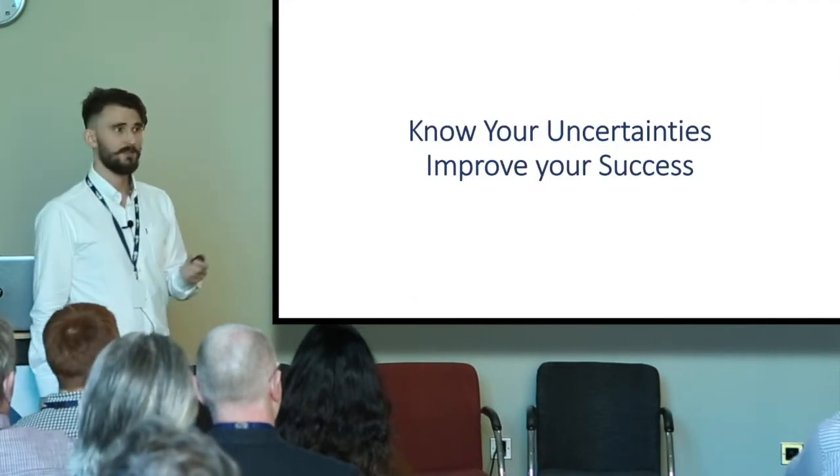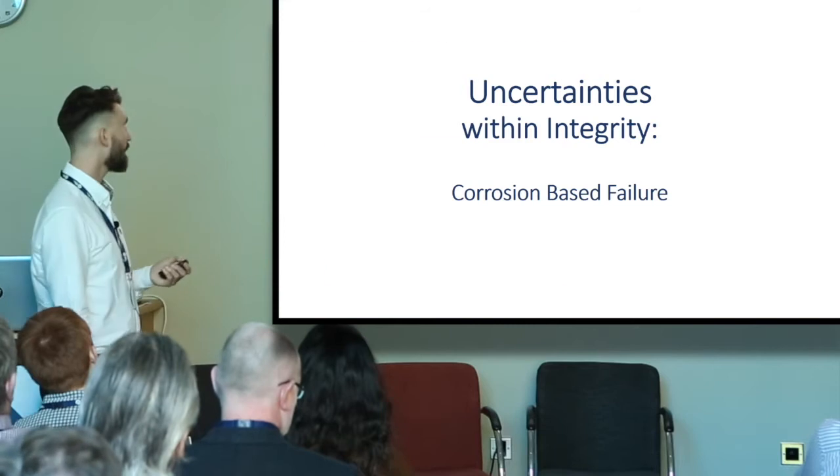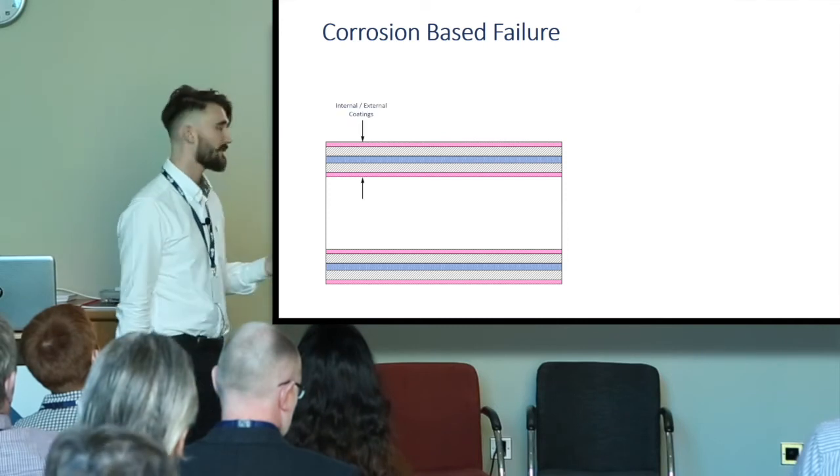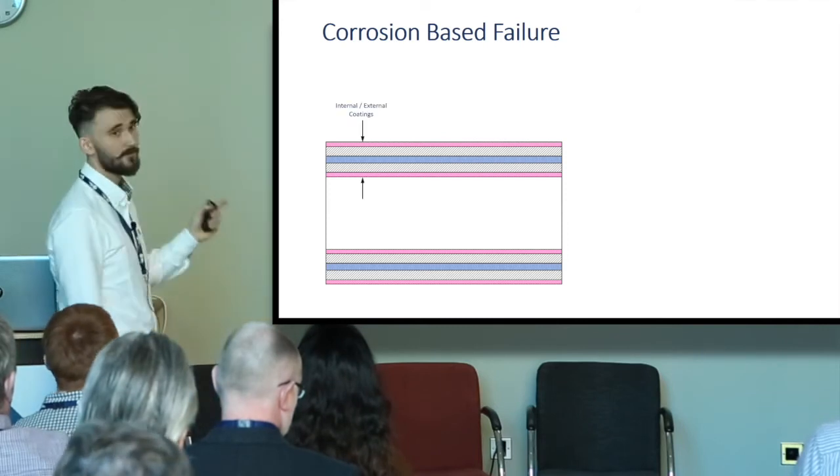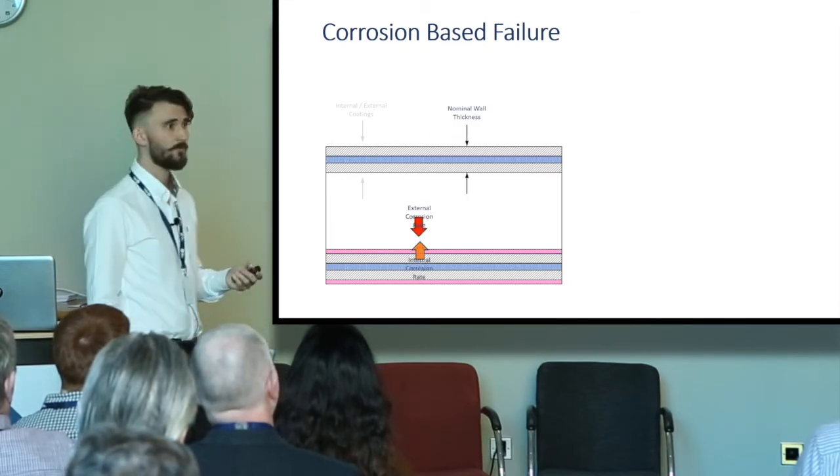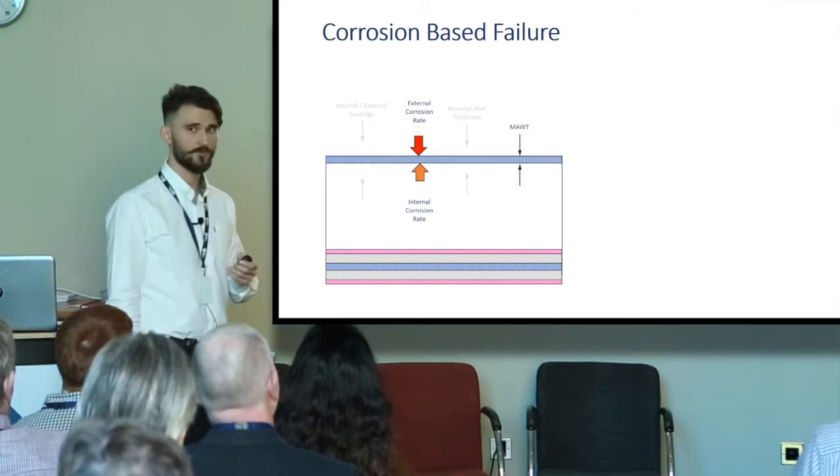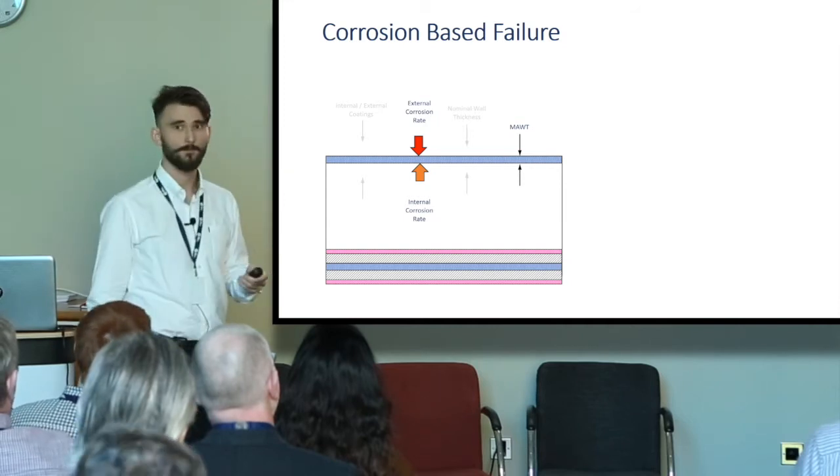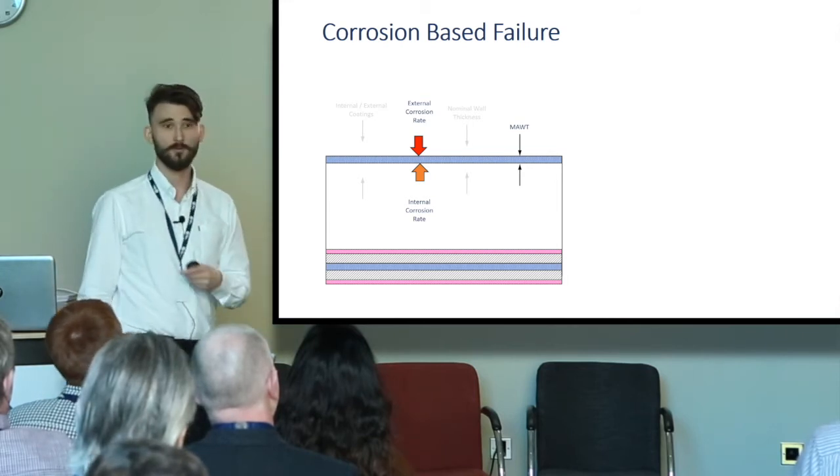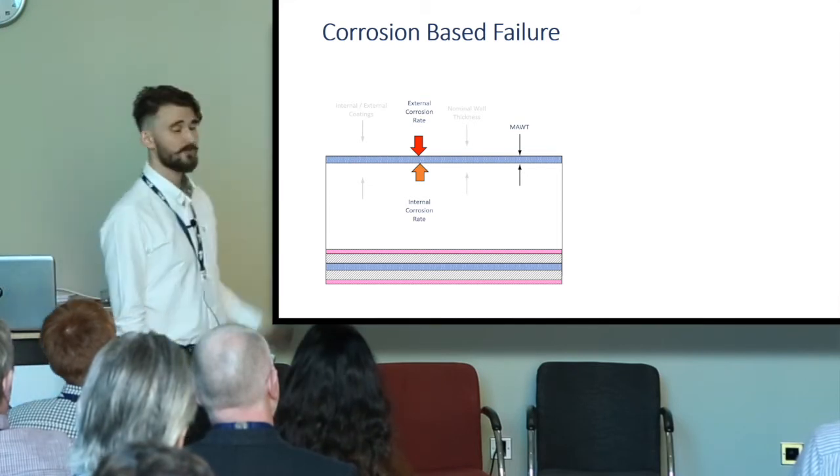So how can we use this in integrity? Let's take some corrosion-based failure as an example. We've got here a cross section of a pressurized pipe or vessel. It's got internal and external coatings. Once they go, we've got a nominal or original wall thickness which is going to get eaten away by our internal and external corrosion rate until we reach a failure criteria, which I've used MAWT, minimum allowable wall thickness, in this case. So what we want to know is how long it's going to take before we reach that failure criteria.